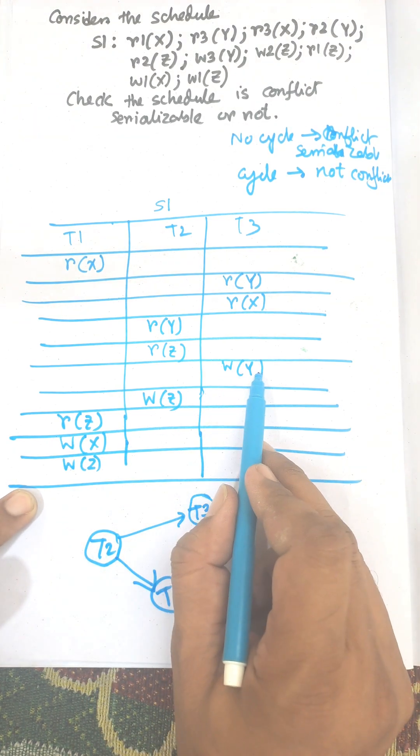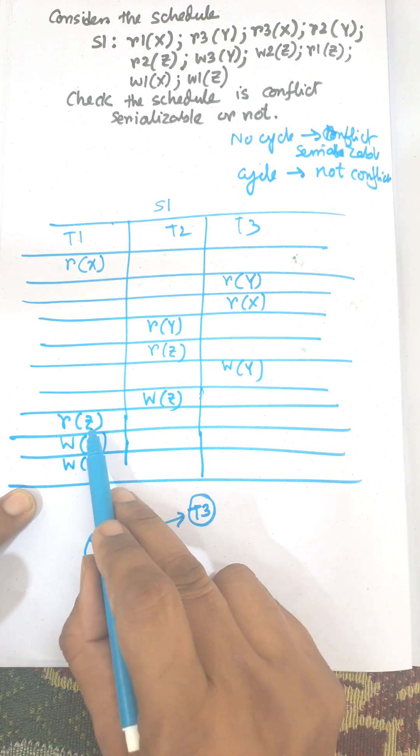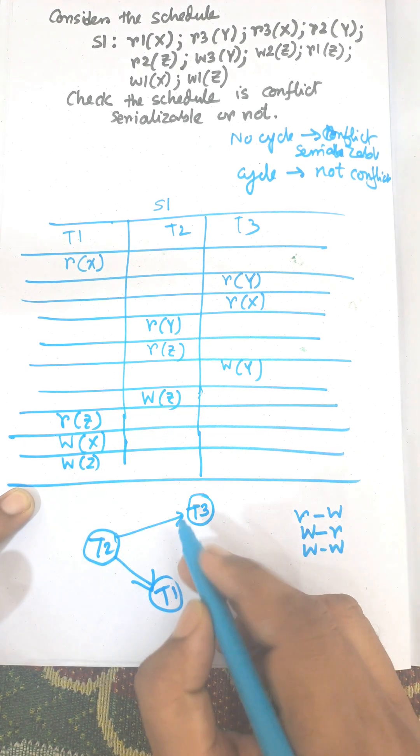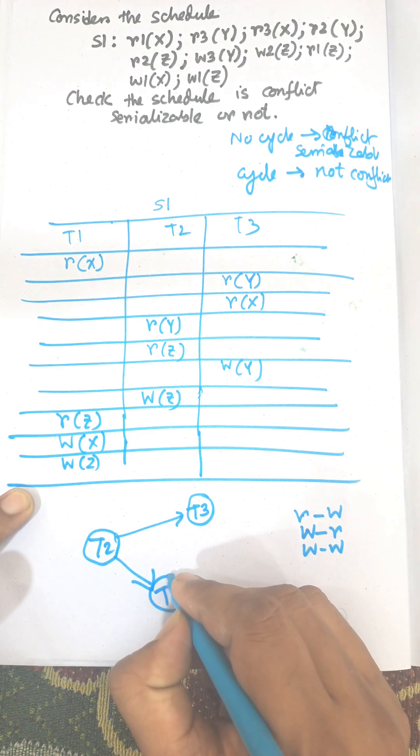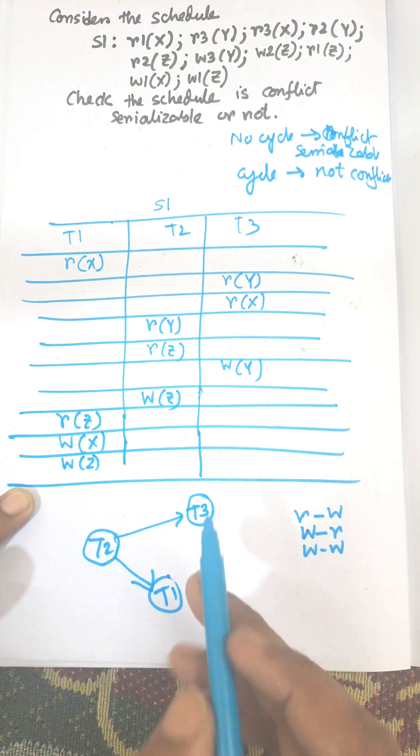Next one is write Y by T1. There is no Y operation. There is write Z. There is a write operation. We need to check write read, read write operation. I mean there is a T2 to T1. There is operation T2 to T1. Already is done.